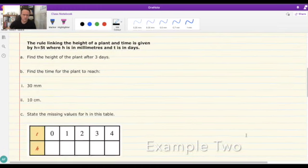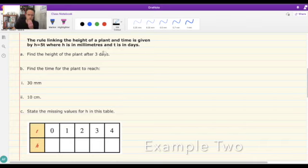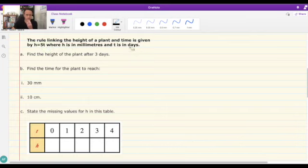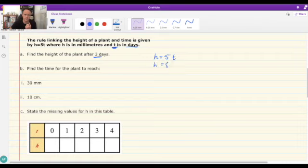We've got the rule for linking the height of a plant and time is given by h equals 5t, where h is in millimeters and t is in days. Find the height of the plant after three days. For this one, what we need to do is substitute in the value of three into our t position. So we've got h equals 5 times 3. 5 times 3 is 15. So we get a value of 15 millimeters for the plant after three days.